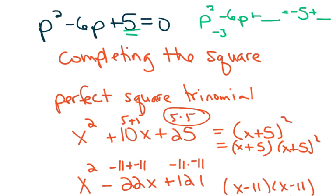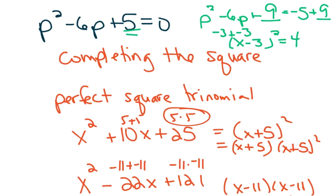The middle term is negative 3 plus negative 3, so the last term must be negative 3 times negative 3, which is positive 9. Then the left-hand side factors into x minus 3, x minus 3, which is x minus 3 squared. And when I simplify the right-hand side, I get 4.